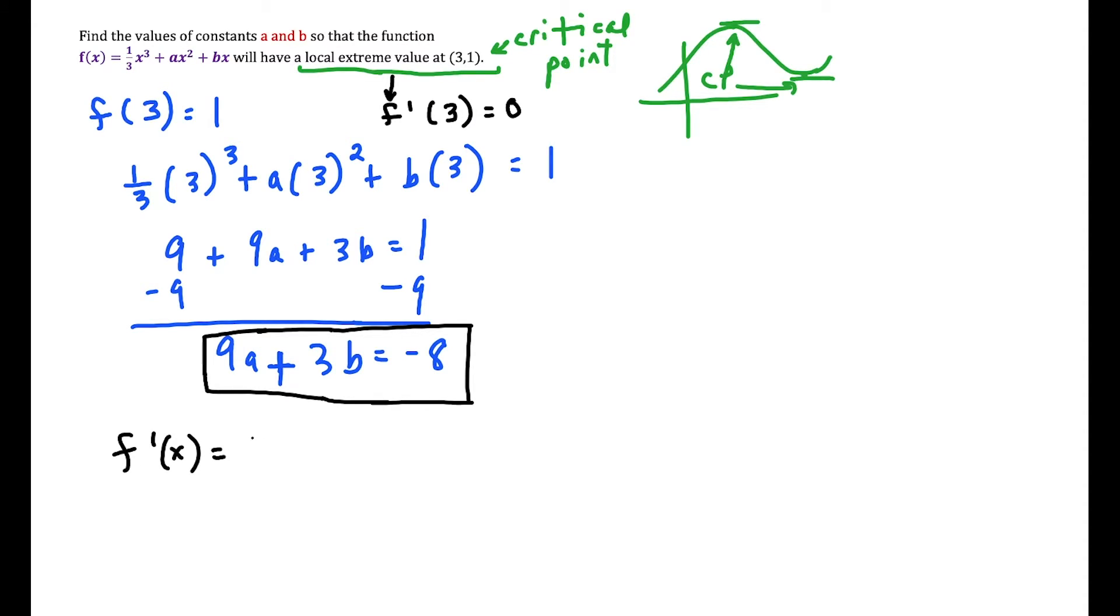f'(x), if we do the power rule on f(x), we have 1/3 times 3x squared, which is just x squared, and then we'll have 2 times a times x, and then at the end we're going to have the derivative of bx is just b. Because remember, a and b are constants, so we're just treating them like numbers here.